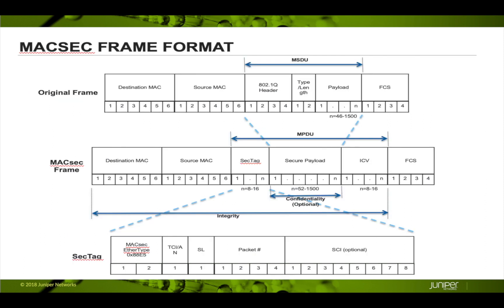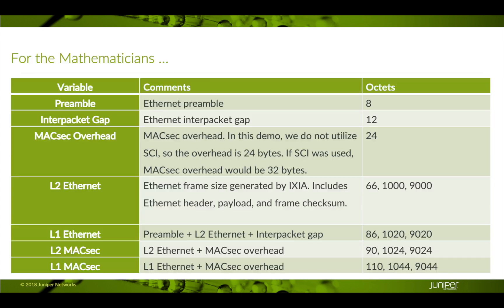Let's take a look at the MaxSec frame format. The original Ethernet frame is encrypted into a secure payload. MaxSec also adds a security tag and an integrity check value. Not shown are the Ethernet preamble and the inner packet gap — the preamble would precede the MaxSec frame, and the inner packet gap would follow it.